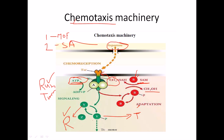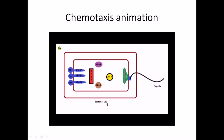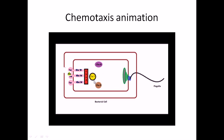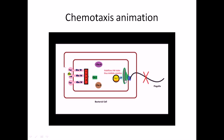Now let's look at an animation. Here we have aspartic acid coming in as a signal, and we have the TAR complex, CheW and CheA complex. As aspartate binds, CheA molecules come in and form a complex with the motor, which in turn activates CheY by attaching a phosphate group to make phosphorylated CheY — the active form. This phosphorylated CheY goes and attaches to the flagella inside the cytoplasm, stabilizing the CW (clockwise) state, which means inhibition of run — not inhibition of rotation entirely.